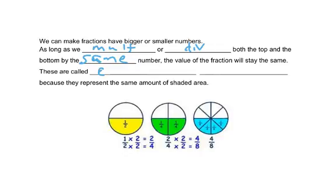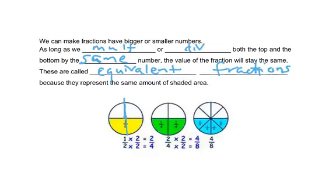We can make fractions that have bigger or smaller numbers as long as we multiply or divide both the top and bottom number by the same number — the value of the fraction stays the same. These are called equivalent fractions. In the picture, half the circle is shaded. Multiplying top and bottom by 2 gives 2 over 4, and again by 2 gives 4 over 8. The shaded area is exactly the same in each circle.